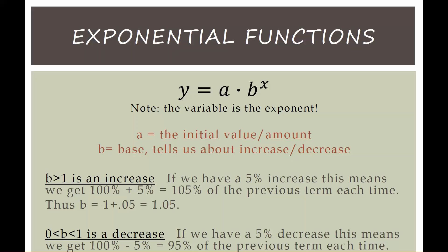Likewise, if we have a decrease, then our base is going to be between 0 and 1. So if we had a 5% decrease, we're actually getting 100% minus 5%, in other words we're only keeping 95% of the previous term each time. So b would be 1 minus 0.05, in other words 0.95.